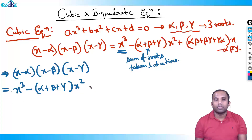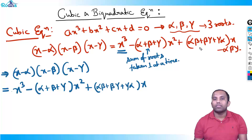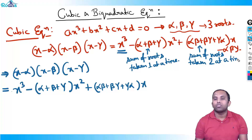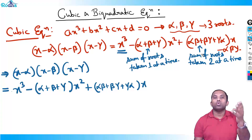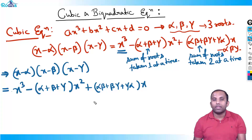After a minus sign comes a plus sign. The power reduces further to x. The coefficient of x is αβ+βγ+γα — the sum of roots taken two at a time. Taking α,β,γ two at a time gives three pairs: αβ, βγ, and γα.